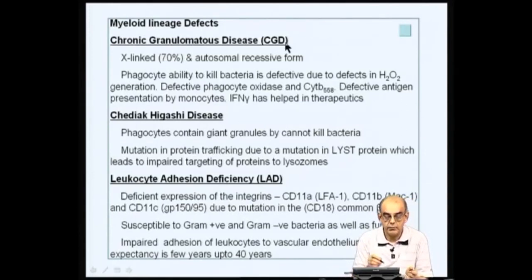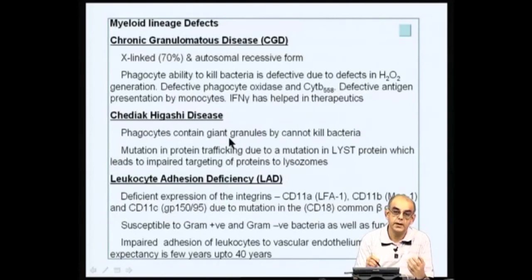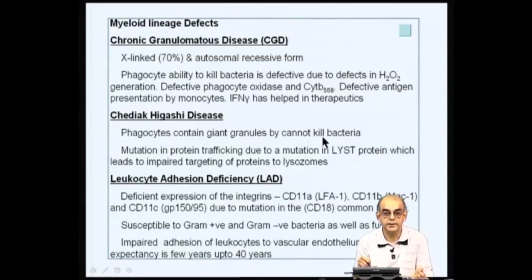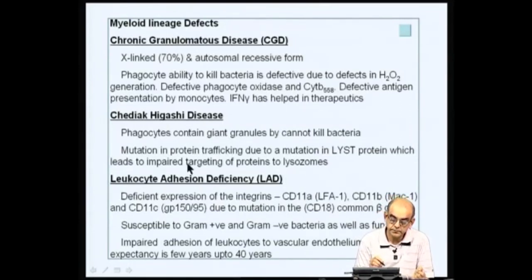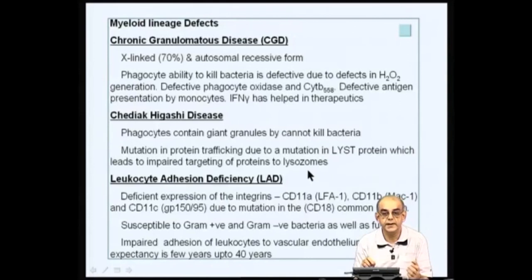In addition to CGD, Chediak-Higashi disease affects the myeloid lineage, where phagocytes contain giant granules. These granules contain various chemicals and enzymes that are helpful in lysing bacteria, but they are giant in size and cannot kill bacteria efficiently. This is due to a mutation in protein trafficking — a mutation in a protein called LYST, whose function is to target various proteins to lysosomes for mediating degradation of proteins, which is involved in antigen presentation.